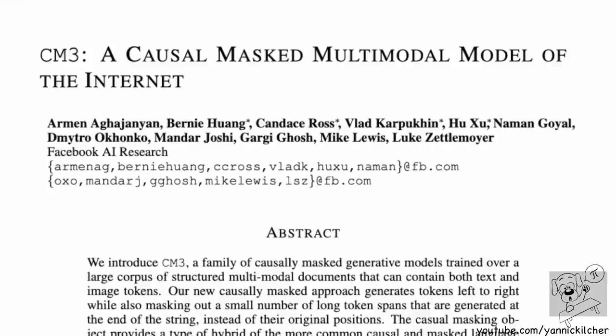Today we'll talk about CM3, which is a model that directly ingests websites and learns the HTML. It uses a novel objective that does left-to-right language modeling, but with a twist that essentially allows it to incorporate bi-directional information. It incorporates text, structure, images, hyperlinks, and with clever prompting, it can do almost anything.